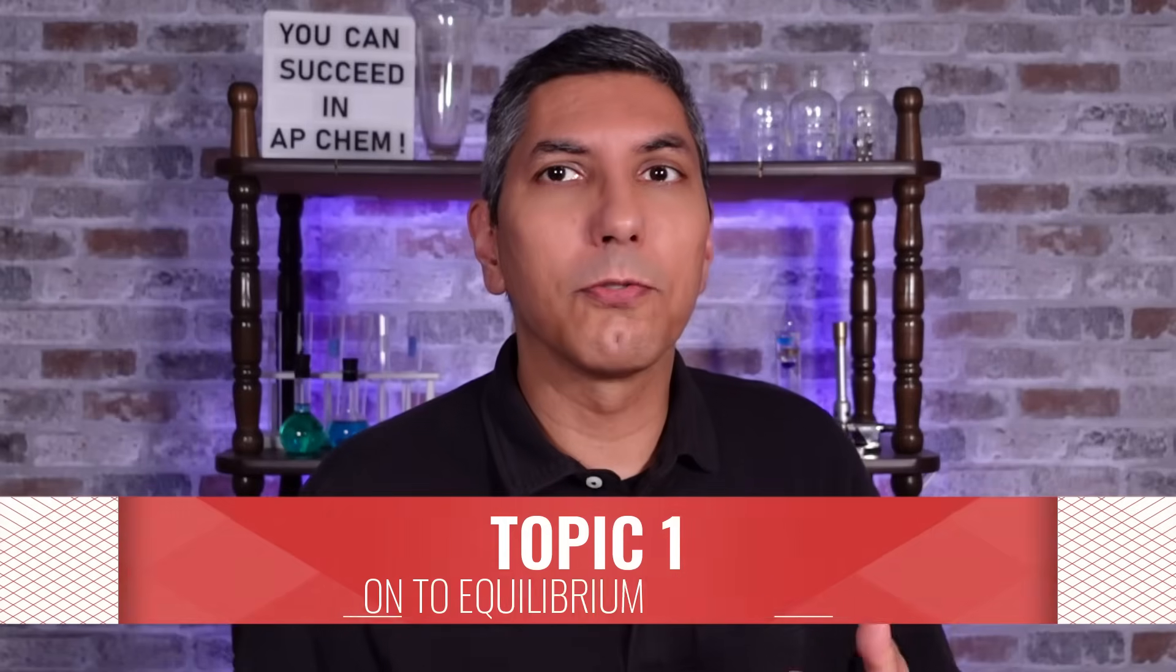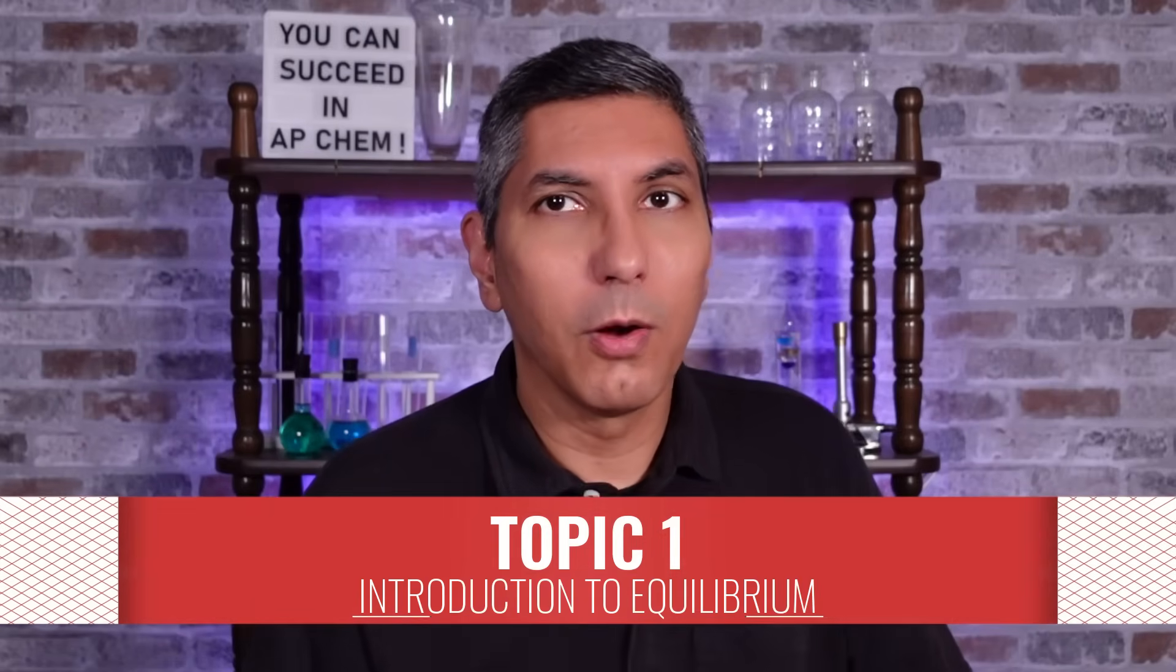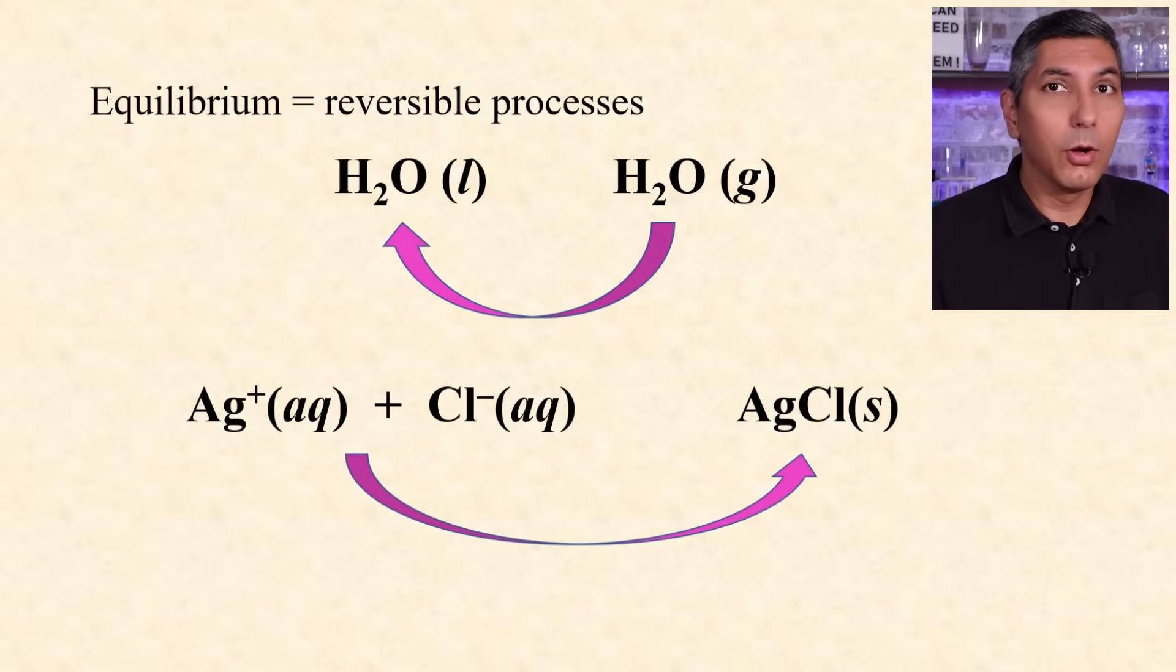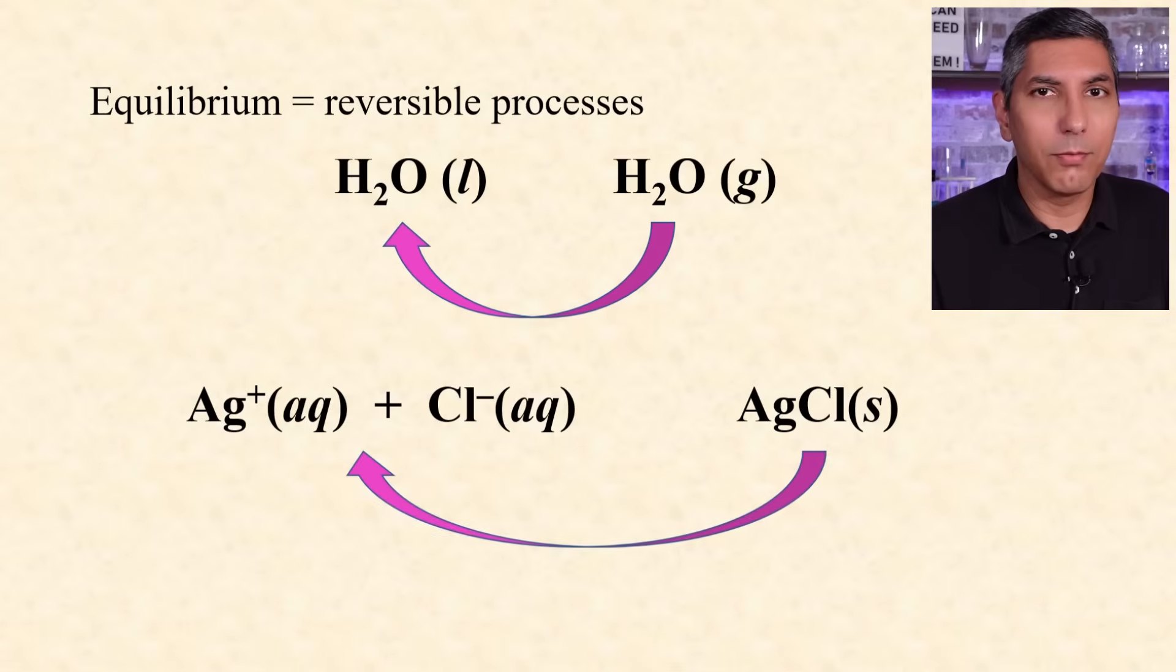Equilibrium refers to reversible processes. Water can be boiled, and it can be condensed. Two ions can form a precipitate, or that precipitate can dissolve. Reversible processes can attain equilibrium, and we use a double-headed arrow to show that reversibility.